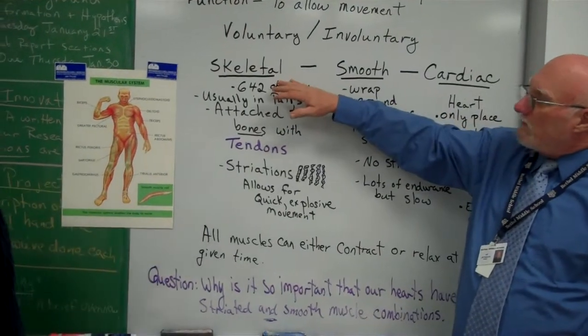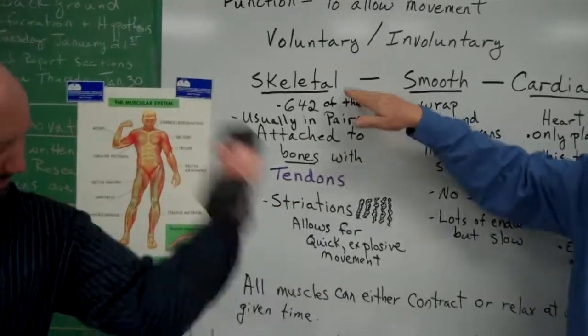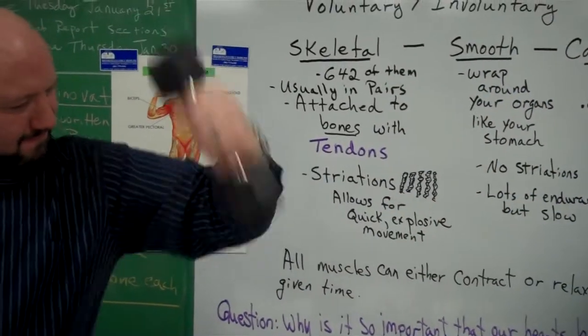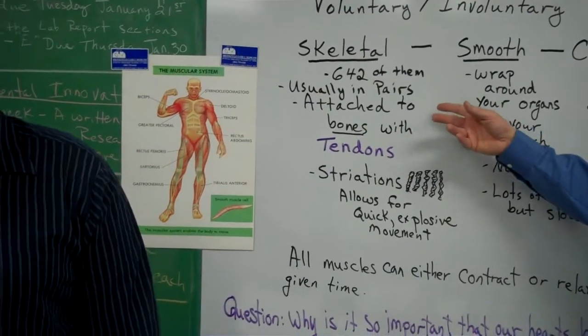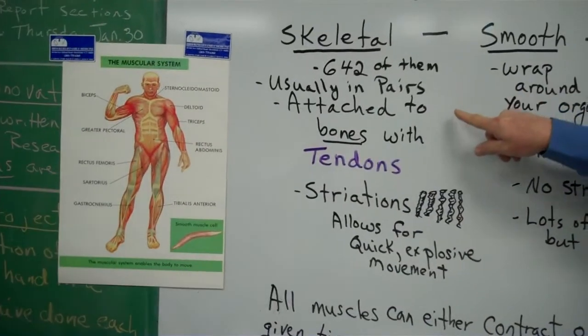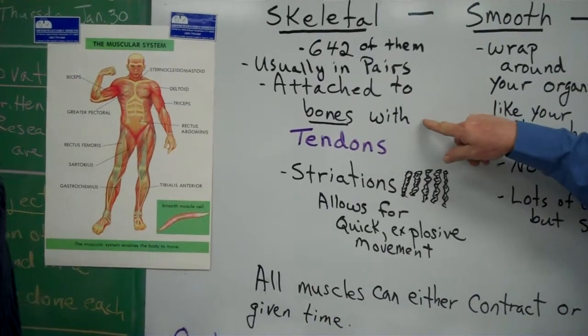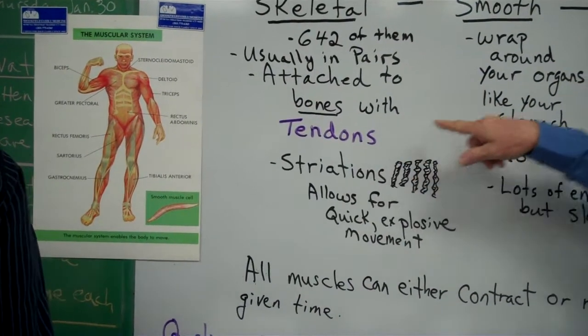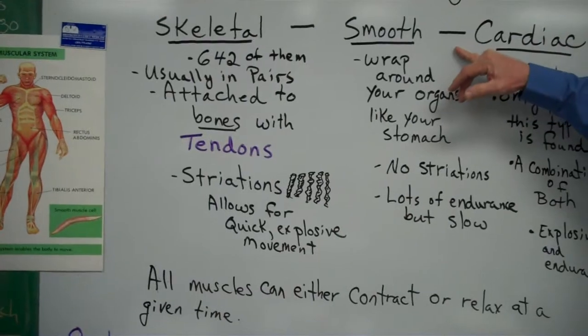So, basically there's three types of muscles. There's the skeletal muscles that you're showing us right now. And they usually work in pairs. And we'll talk more about it in our next video. And these are the ones that are attached to the bones with tendons. Then we have smooth muscles.